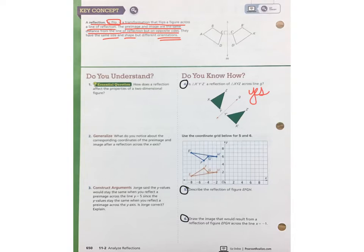If you'll notice here, Y and Y prime are about the same distance from line G. Z across that line. Same thing with Z and Z prime and X and X prime.